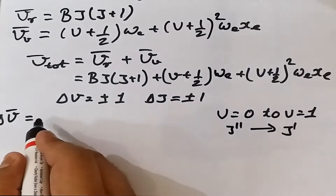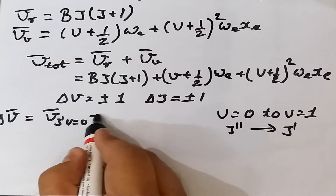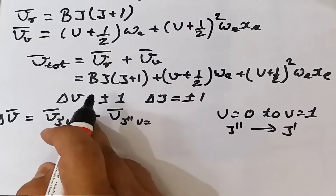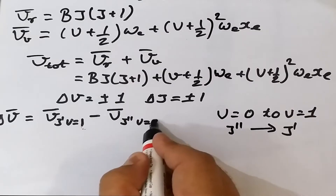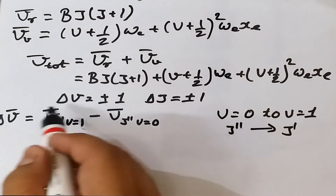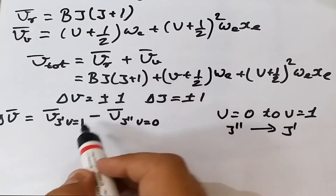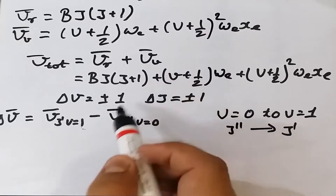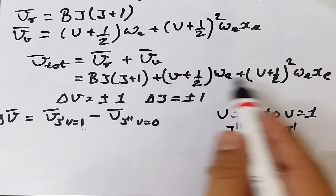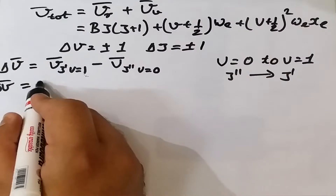The energy difference is Δν̄ = ν̄(J', v=1) − ν̄(J'', v=0). For the upper state we substitute J = J' and v = 1; for the lower state we substitute J = J'' and v = 0, and then simplify the relation.